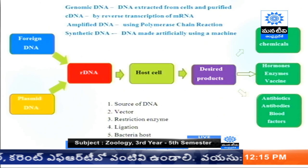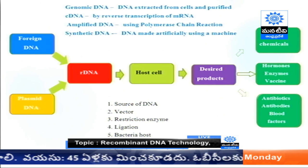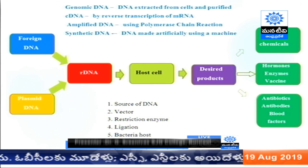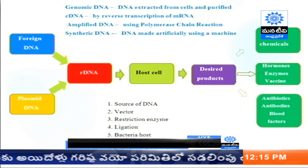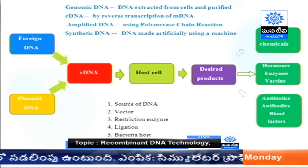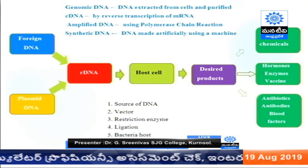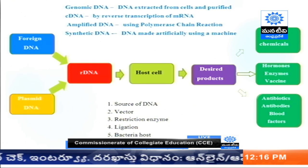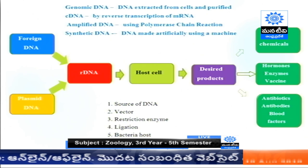There are two types of vectors: cloning vectors, useful for the cloning process, and expression vectors, useful for the final production of a product such as a protein or enzyme. The foreign DNA may be genomic DNA, cDNA, amplified DNA, or synthetic DNA, all used in the rDNA process.